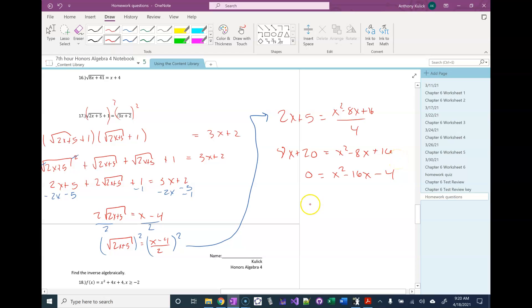And then that's quadratic formula time. It's going to be 16 plus or minus the square root of 16 squared minus 4 times 1 times negative 4 over 2 times 1.